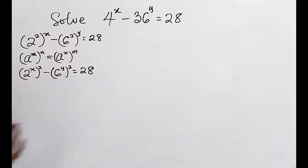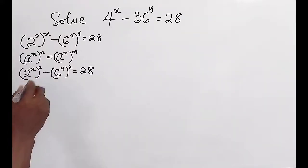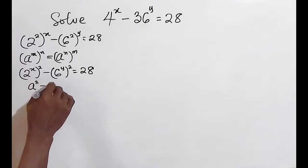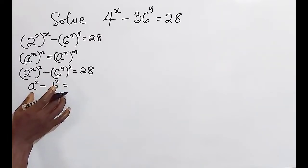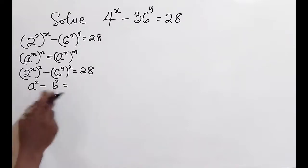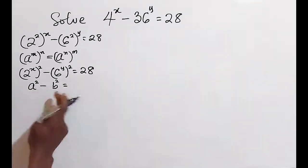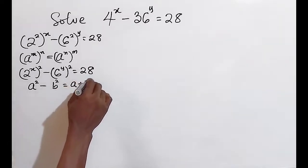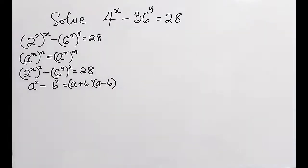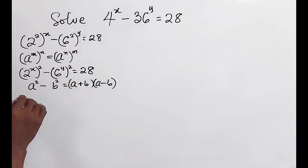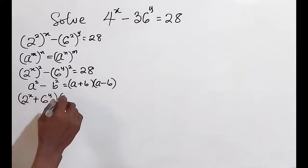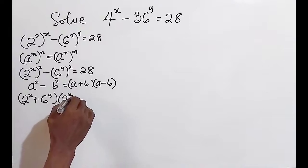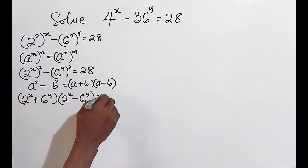If you look at this equation closely, we can see this is of the form a² minus b², which is an algebraic expression known as the difference of two squares, giving us (a + b)(a − b). So we can write: (2^x + 6^y)(2^x − 6^y) = 28.